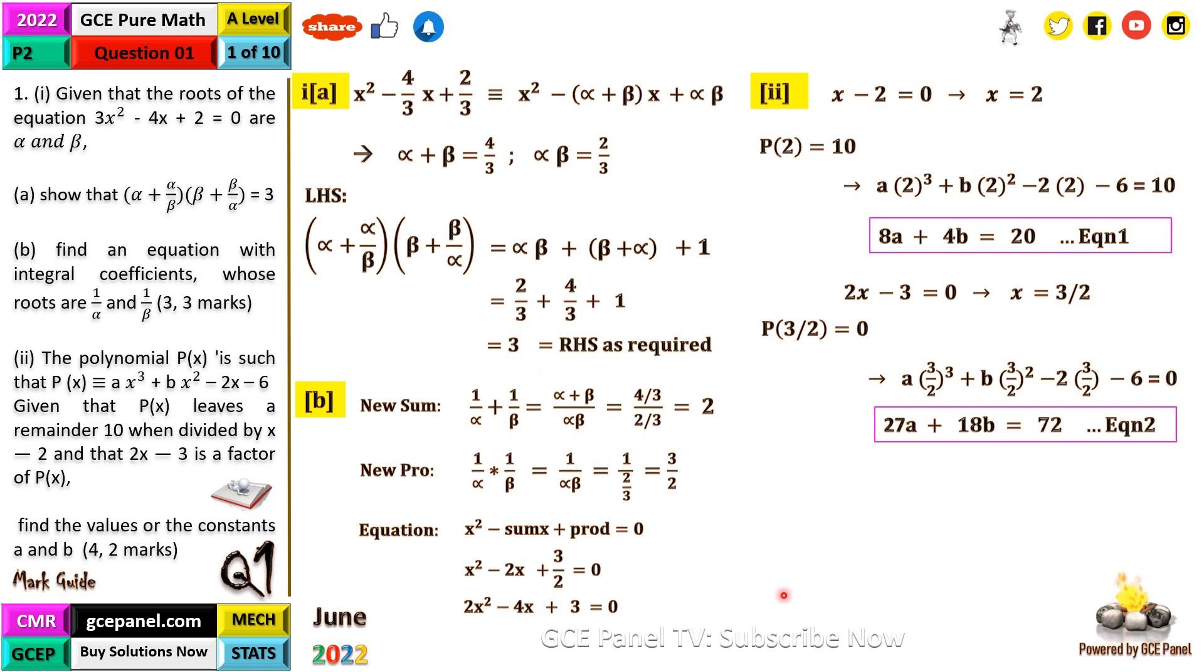From these two equations, we can solve for a and b. Equation 2 minus 4.5 times Equation 1 implies -9a = -18, so a = 2. Substituting in Equation 1: b = (20 - 16)/4 = 1.